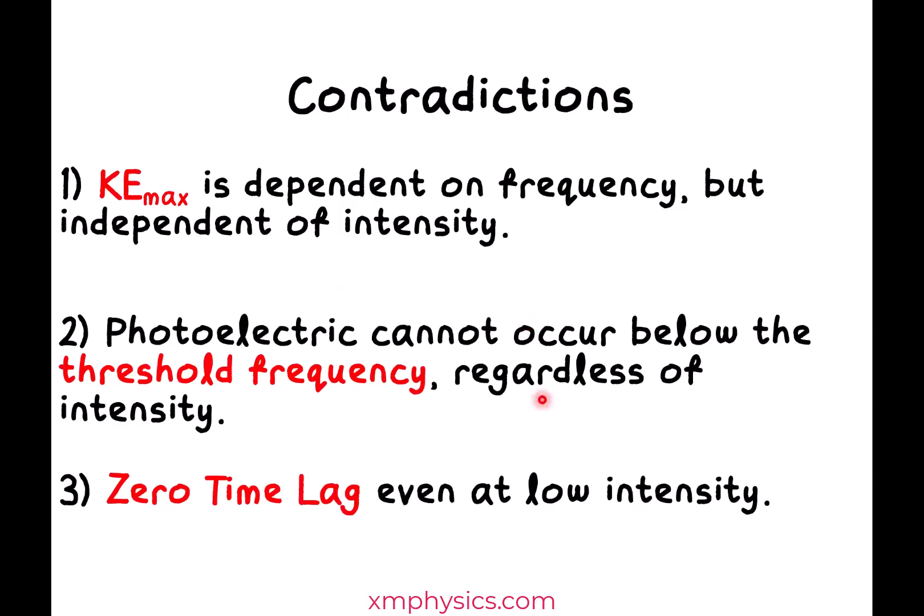So here's a summary of the observations that contradict the belief that light is a wave. First, the KE max is not affected by intensity of the light. It's only dependent on the frequency of the light used. There's also this thing called the threshold frequency, below which photoelectric effect just does not occur, regardless of the intensity of the light. And the third thing is, we were not able to observe any time lag, even if we are using a light beam that has very, very low intensity.